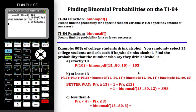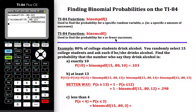Find the probability that the number who say they drink alcohol is less than 4. We're trying to find P(X < 4). To be less than 4, either three, two, one, or none of those people will say they drink alcohol. Since the binomCDF function requires X or fewer successes, I can't use it directly with X < 4. So I rewrite this as X ≤ 3 — it's either three people, two people, one person, or none. Once I rewrite it, I can use the binomCDF function.